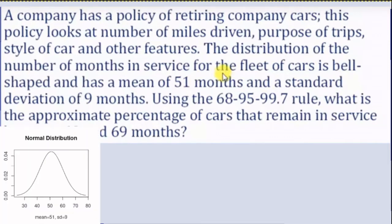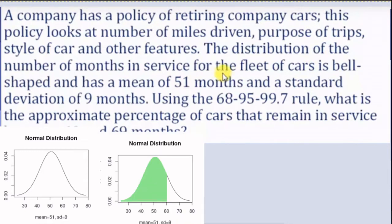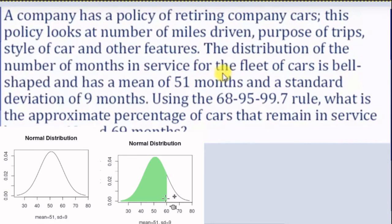We'll take this opportunity to examine the empirical rule. We could use pnorm to find this green area — that is the area below one standard deviation of the mean. If the mean is 51 and the standard deviation is 9, then one standard deviation above the mean is going to be at 60. So the area below 60 is the area below one standard deviation of the mean.